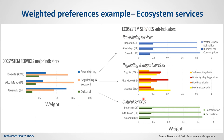On the left, you can see the breakdown of specific services for each of the major groups: provisioning, regulating, and cultural services. For provisioning services, in all three countries stakeholders value water supply reliability much more than biomass for consumption. For cultural services, a similar pattern emerged where stakeholders from all three countries value conservation services much more than recreation services. For regulating services, things vary depending on the country.